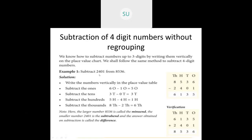So minus 2401. We start subtracting from the ones place. In the ones place: 6 minus 1 is 5. In the tens place: 3 minus 0 is 3. In the hundreds place: 5 minus 4 is 1. In the thousands place: 8 minus 2 is 6. So the answer is 6,135.